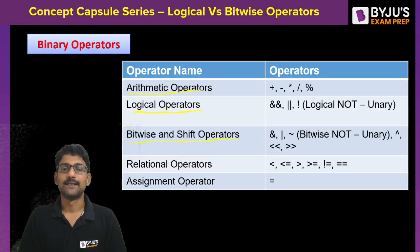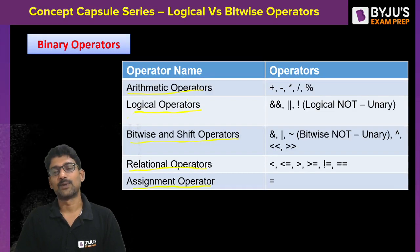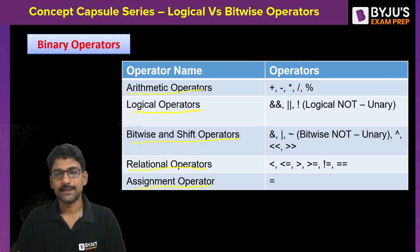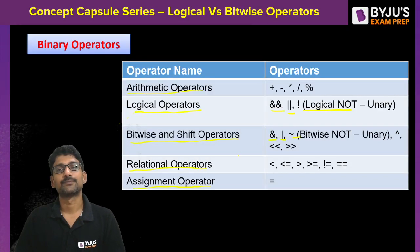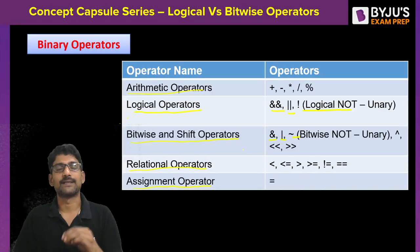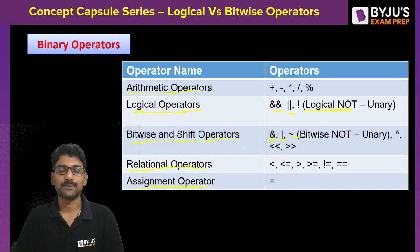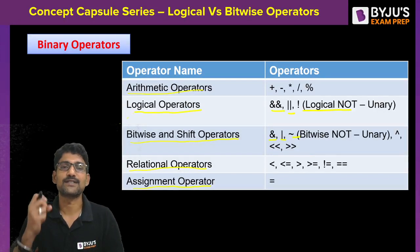There is also the assignment operator. Now observe carefully: in the logical category we have AND, OR, and NOT. In the bitwise category we also have AND, OR, and NOT — so we have logical AND vs bitwise AND, logical OR vs bitwise OR, logical NOT vs bitwise NOT. What is the difference? That is today's concept capsule.